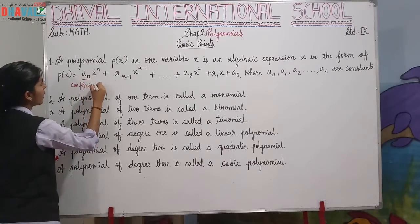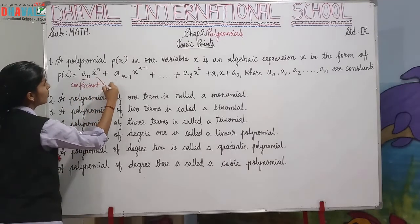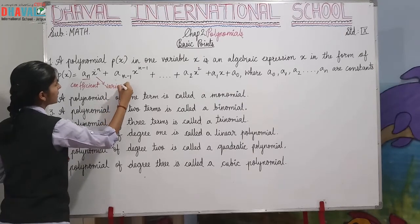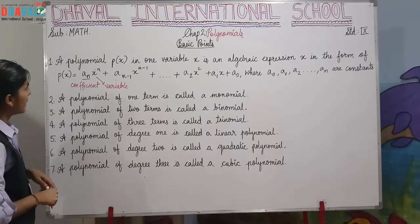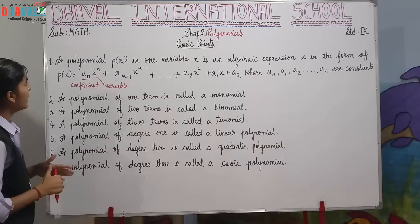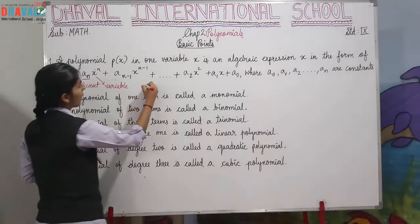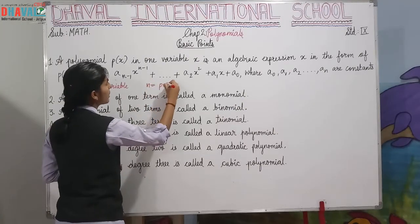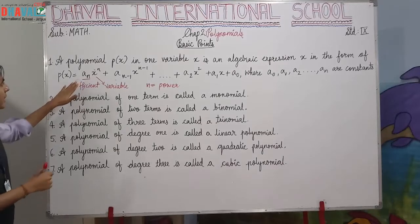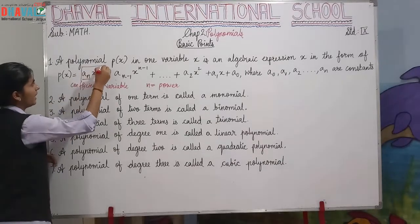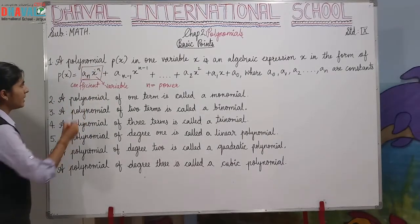there are many parts in which An is called a coefficient. It's a coefficient of x; x is a variable here. As you can see in the definition, x is a variable and An is its coefficient, and n represents the power.